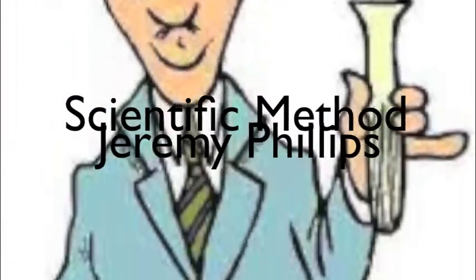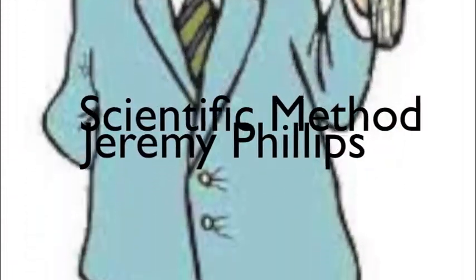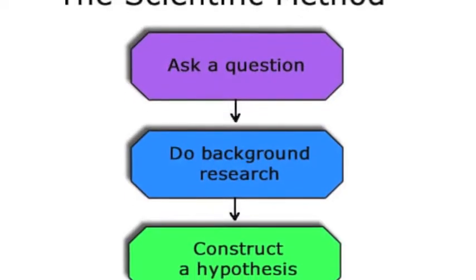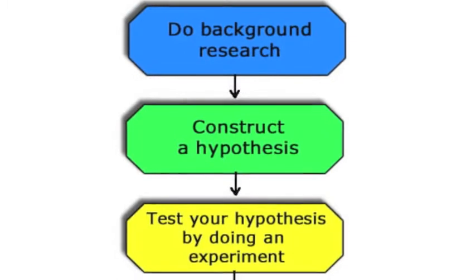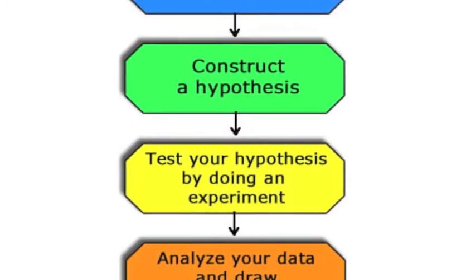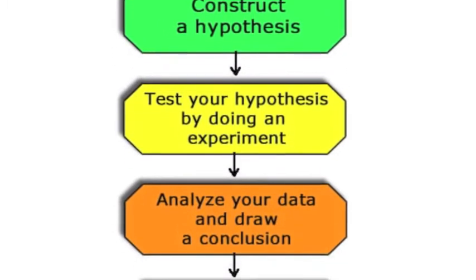Today class we're going to talk about the scientific method. The scientific method has six steps. The method is used to organize thoughts and procedures as you go through an experiment.